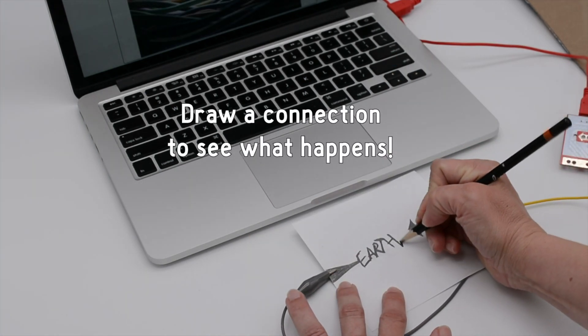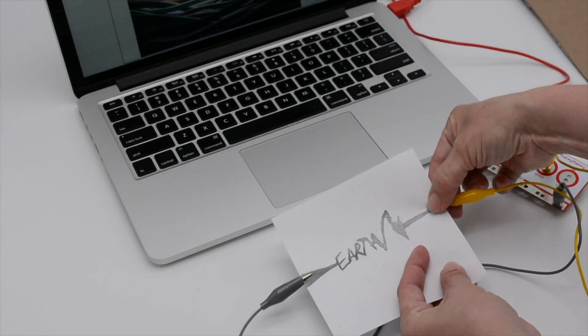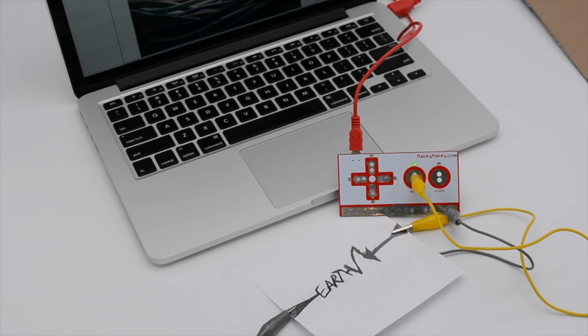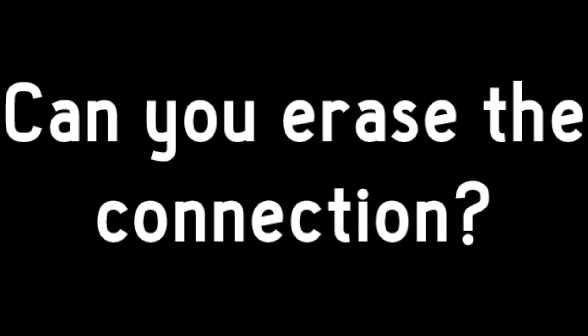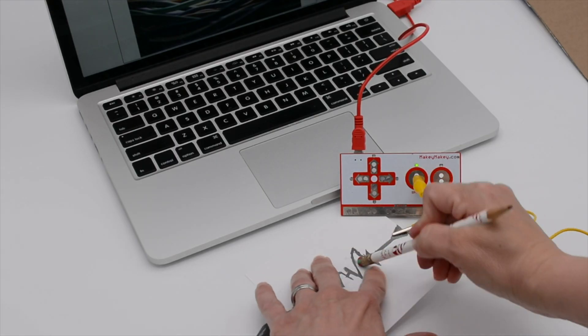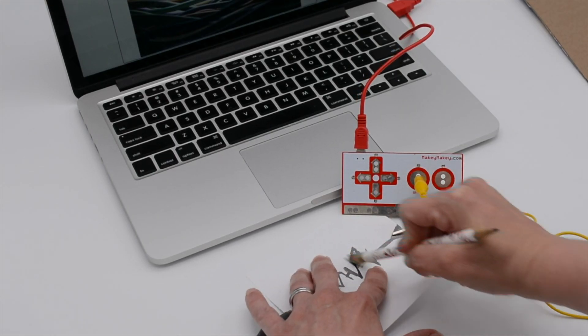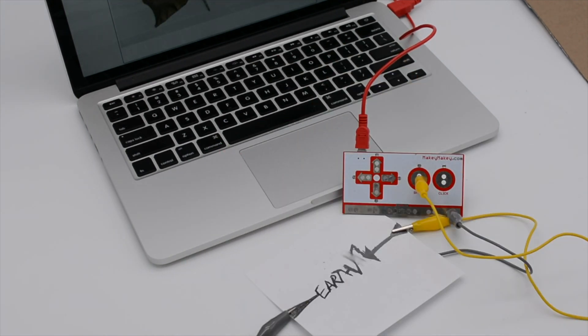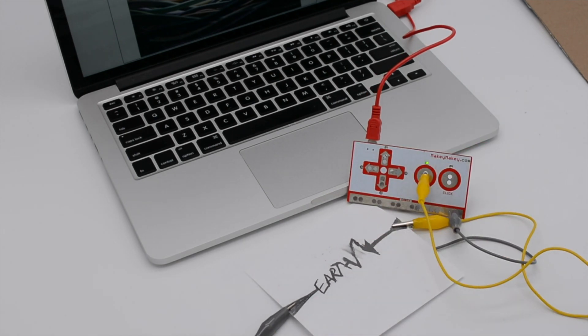Now let's draw a connection to see what happens. It completed the circuit, didn't it? It's kind of annoying. It might keep going off. Let's see if we can fix it. How cool is that? We can erase the circuit and we can draw it back and erase and draw. Pretty cool.